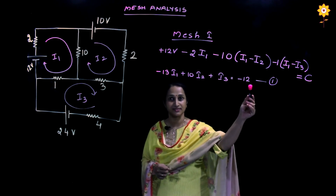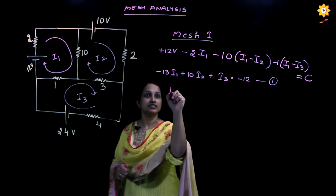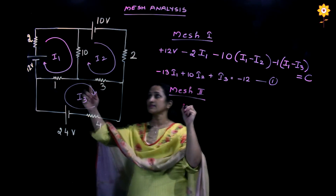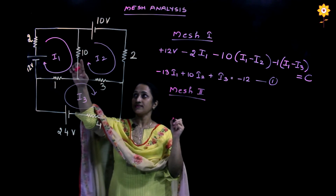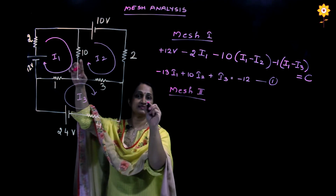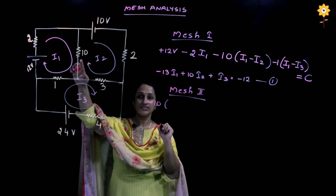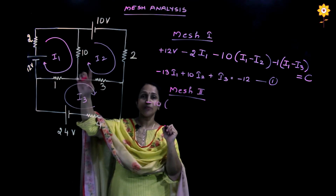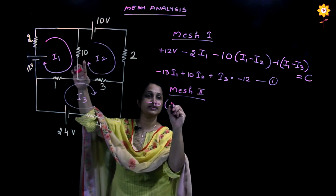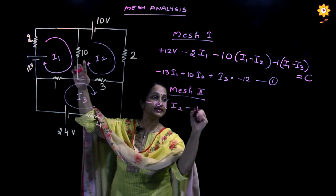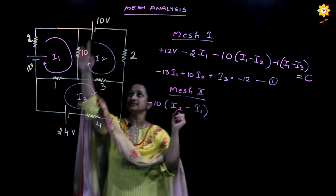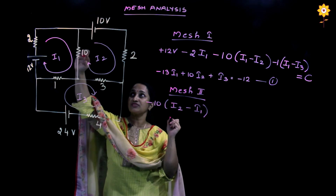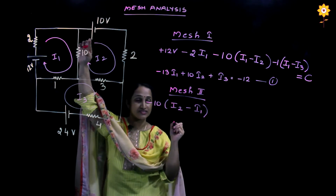Once you have written the KVL equation, bring I1 terms together, I2 terms together, and I3 terms together, equal to a constant. Similarly, proceed for mesh 2. The 10-ohm resistor has two currents — I2 and I1 — both in opposite directions, so this is written as minus 10 times (I2 minus I1).